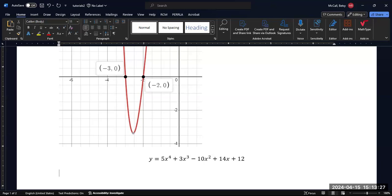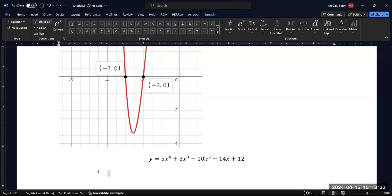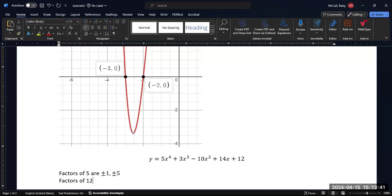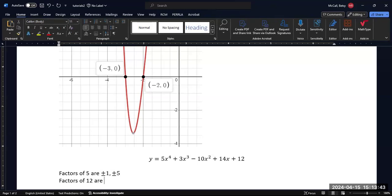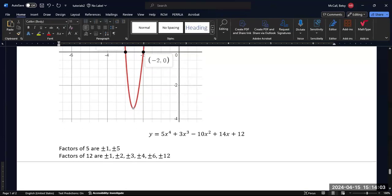What are our rational zeros? The factors of 5 are plus and minus 1 and plus and minus 5. And the factors of 12 are plus and minus 1, plus and minus 2, plus and minus 3, plus and minus 4, plus and minus 6, and plus and minus 12.